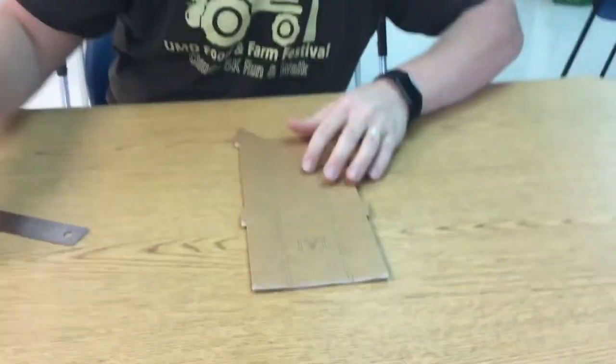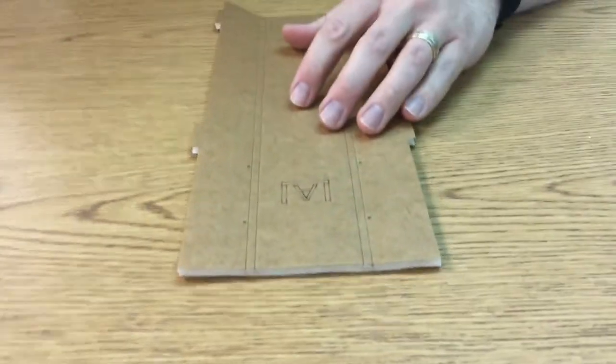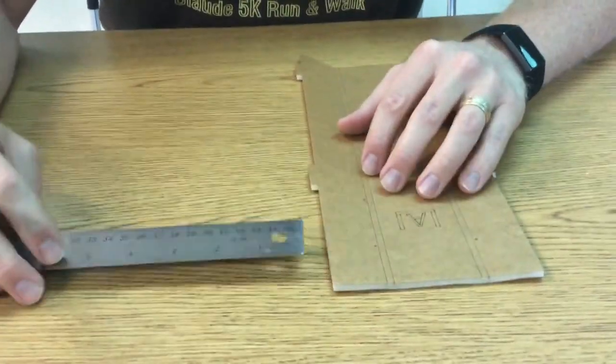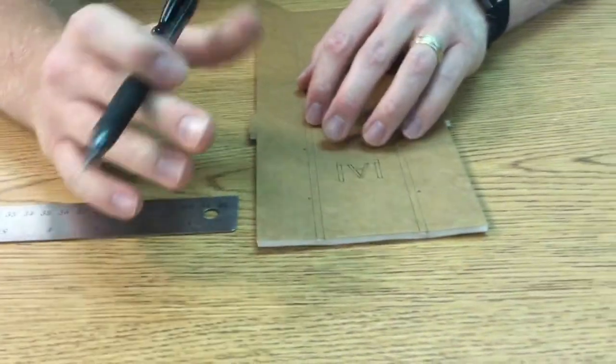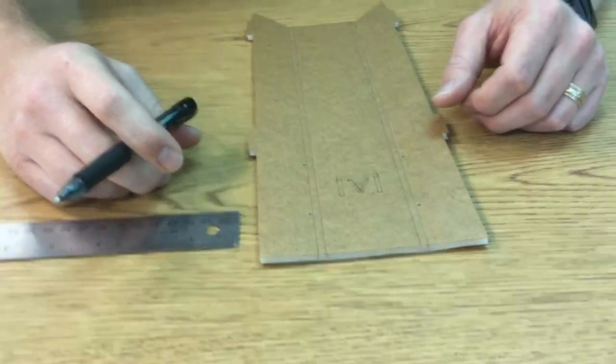How do you fold foam board to get three-dimensional shapes out of it? So if you come in close here you can see what you would first need to do is measure and mark on your foam board the shapes that you eventually need to cut out.